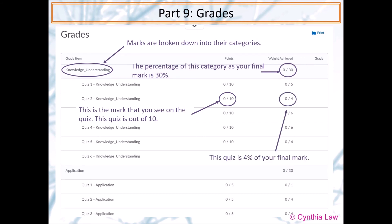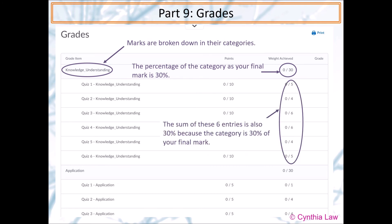At the right-hand side, it says weight achieved. It means that the quiz is 4% of your final mark. If you add up the weight of all six quizzes, they will total up to 30% because the category itself is out of 30% of your final mark.